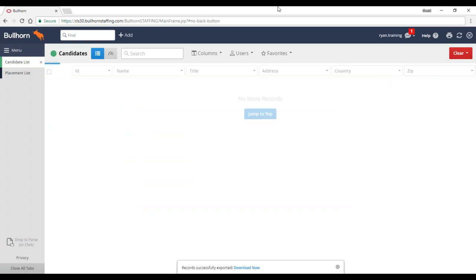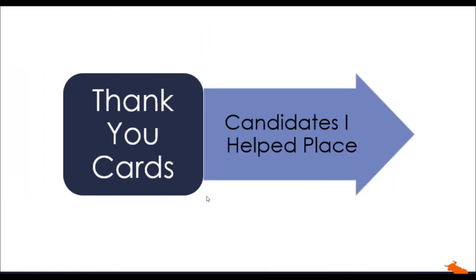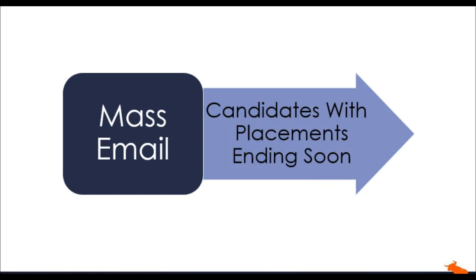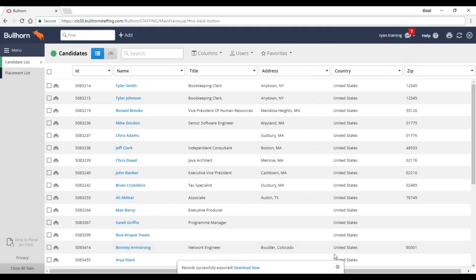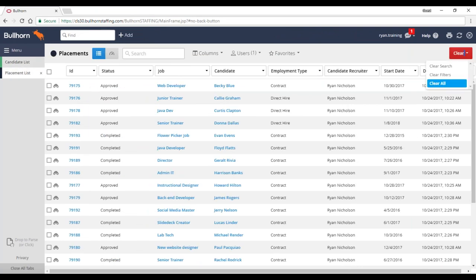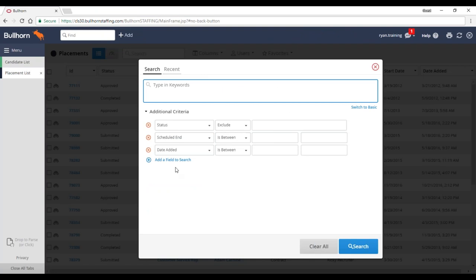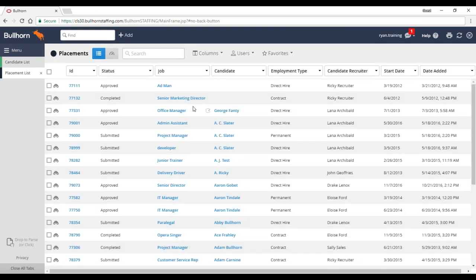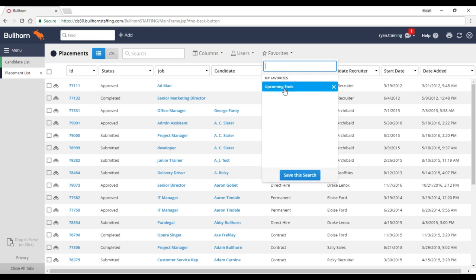Now I want to take a look at what we're going to do for a mass mailing. We covered physical mailings — now what if I want to do a mass email? What if I have a ton of candidates with placements ending soon? Maybe it's the end of the year and I want to check in, or I do this every quarter. Because I do it every month, I have a favorited search that I'm going to use.